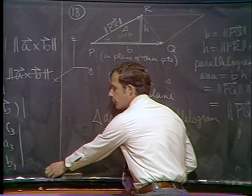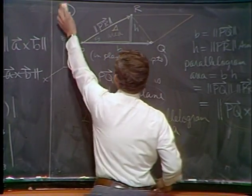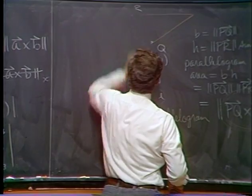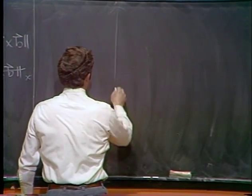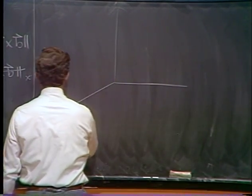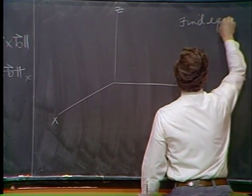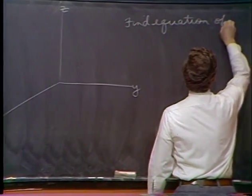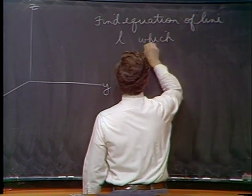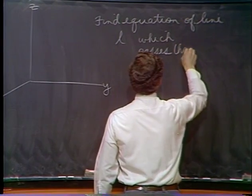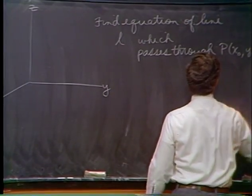Having covered dot products and cross products sufficiently, let's move to the next topic: the concept of a line in three-space. Find the equation of line L passing through a point P₀ with coordinates (x₀, y₀, z₀).